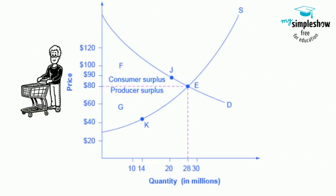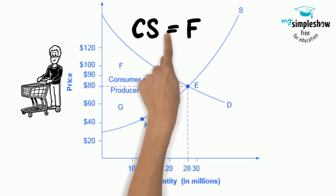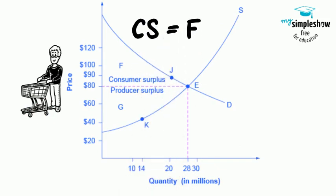Consumer and producer surplus. The somewhat triangular area labeled by F shows the area of consumer surplus, which shows that the equilibrium price in the market was less than what many of the consumers were willing to pay.